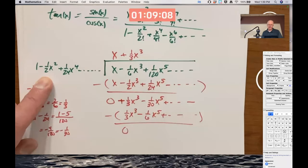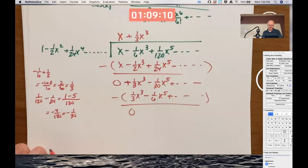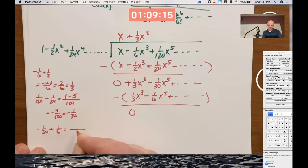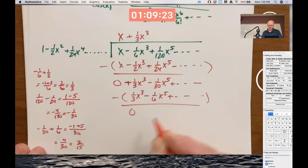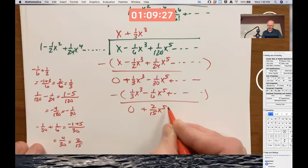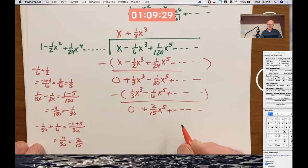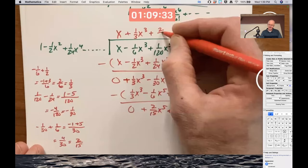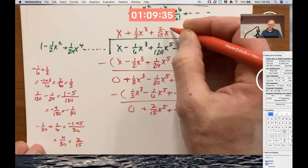Get 0. One more fraction to deal with. Negative 1 30th plus 1 6th. Common denominator of 30 becomes negative 1 plus 5 over 30. 4 over 30, which is 2 15ths. So this becomes plus 2 15ths x to the 5th, etc. And that's good enough to give me my last non-zero term that I want, plus 2 15ths x to the 5th, etc.